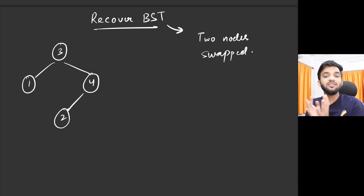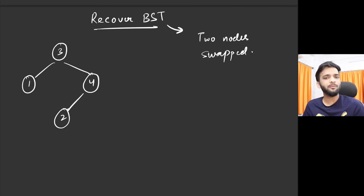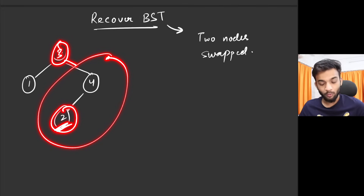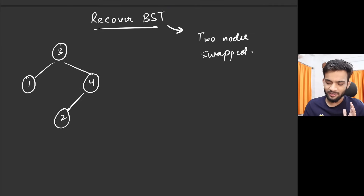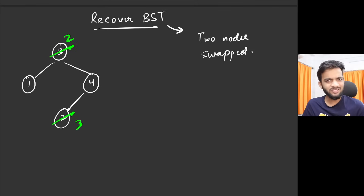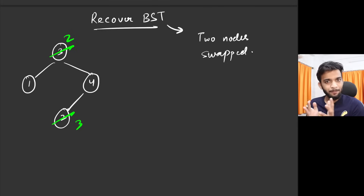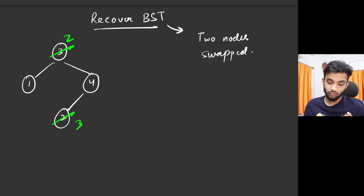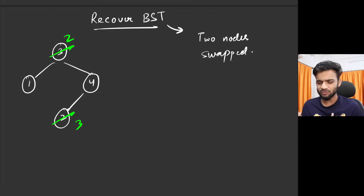For example, is this a valid BST? The answer is no, because this node is three and everything to the right of it should be greater than three, but there is a two which is smaller. If I take these two nodes and swap them, now it is a valid BST. So you're given a BST where two nodes are always swapped — remember, always two nodes.